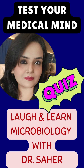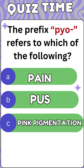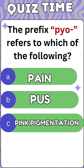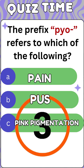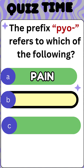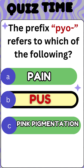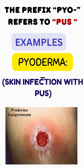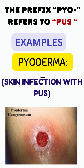Let's test your medical knowledge. The prefix 'pyo' refers to which of the following: pus, pain, or pink discoloration? The answer is pus. Let's understand with an example — pyoderma: 'pyo' means pus, 'derma' means skin, so pyoderma means a skin infection with pus.